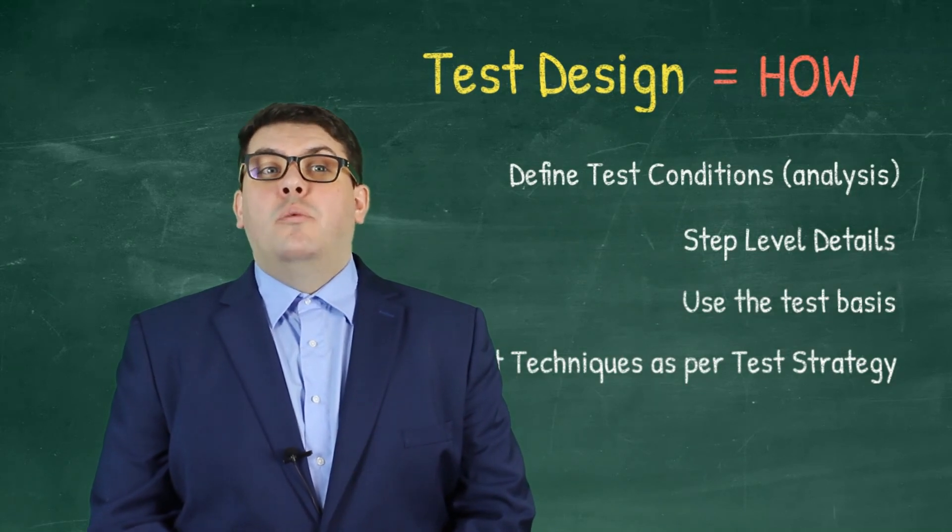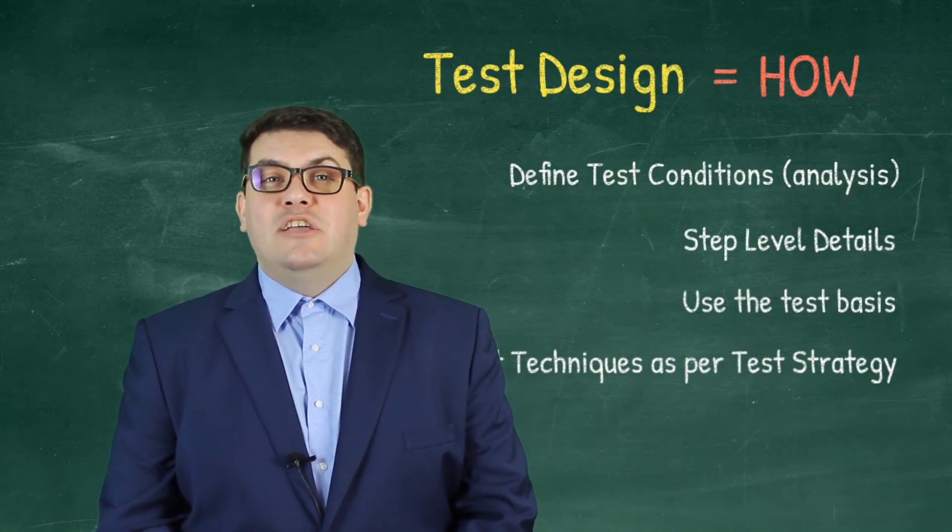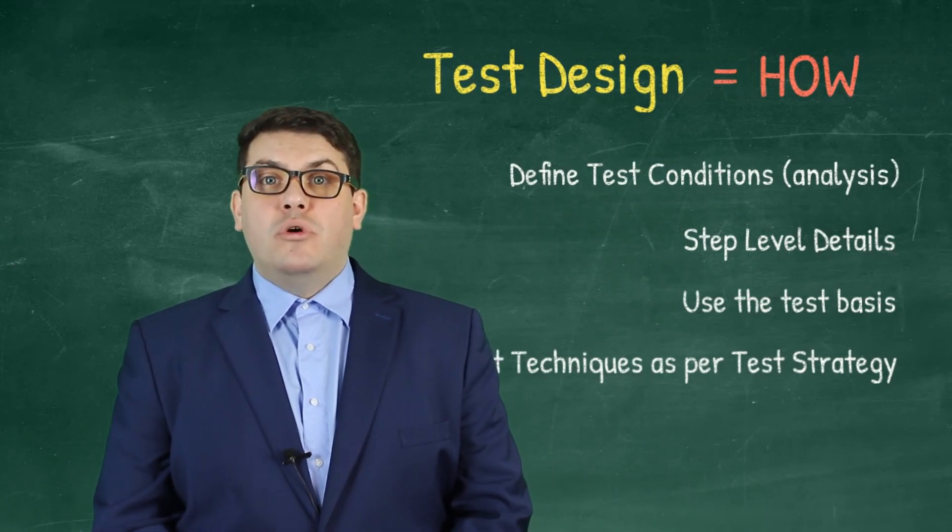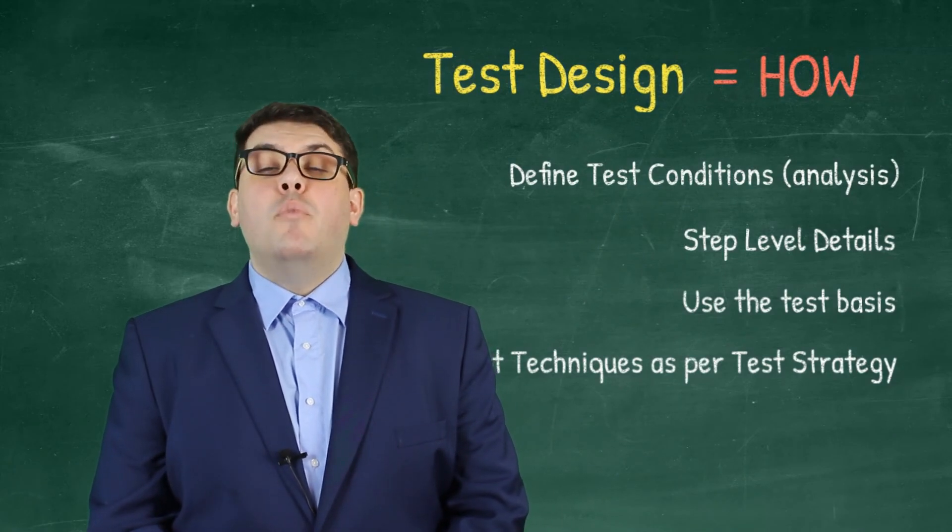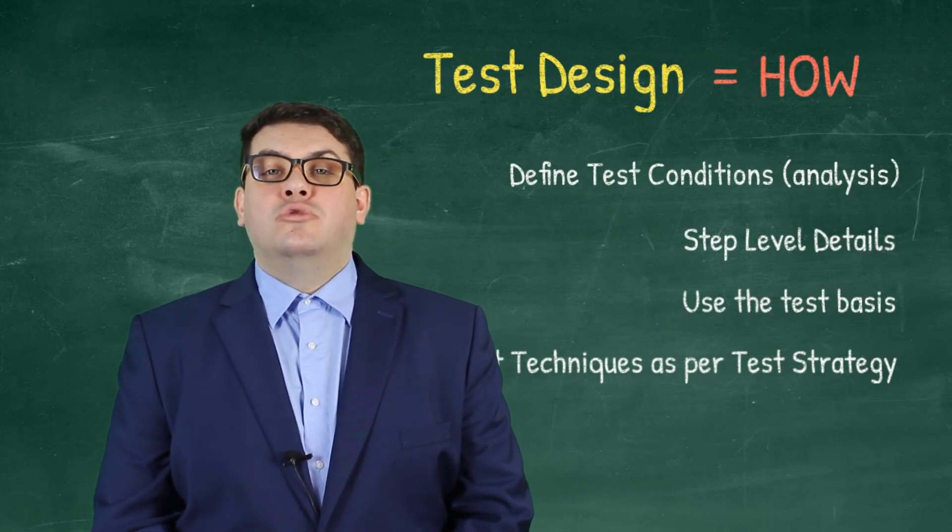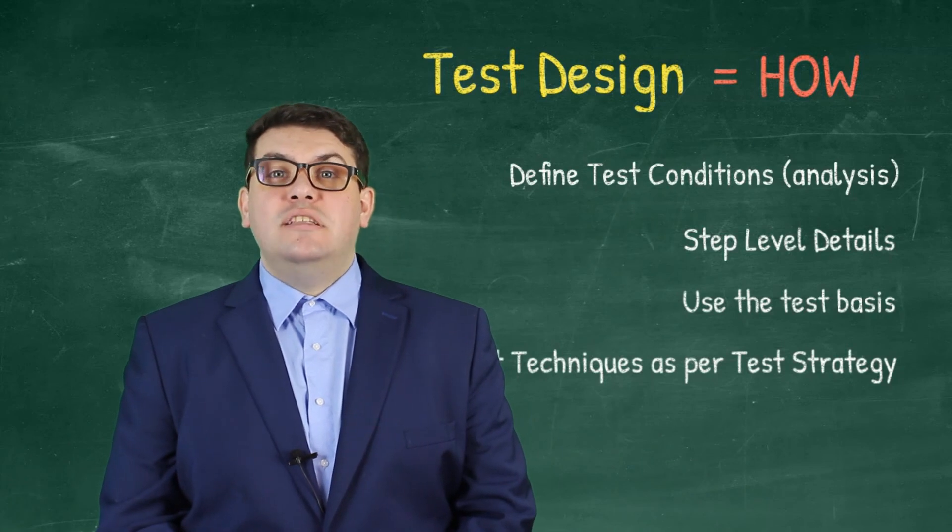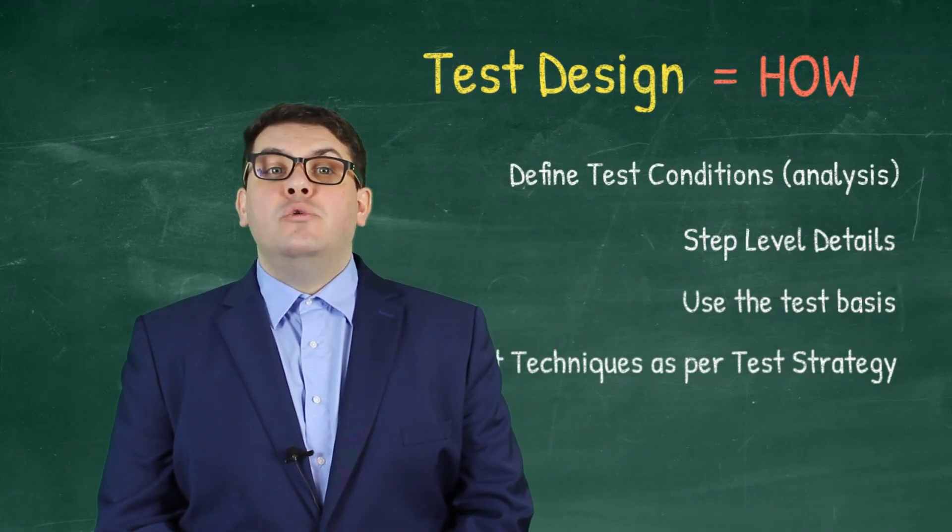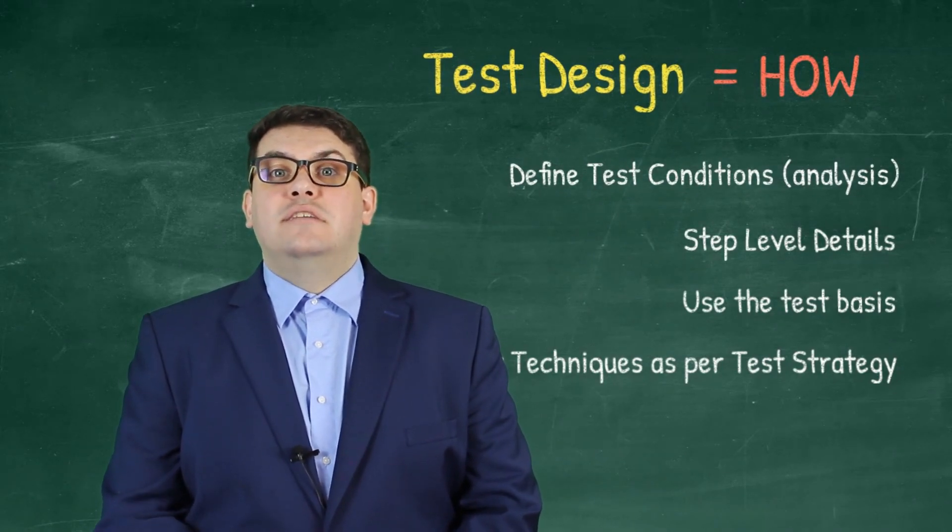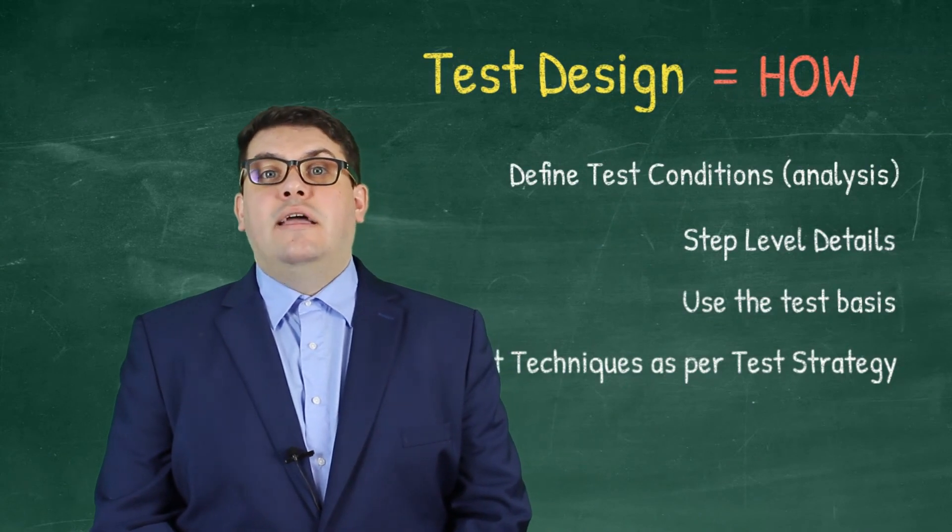Now do not forget, we mentioned test analysis and test design. They are going to be followed by test implementation and test execution. But test planning is very important and also is test closure. The monitoring and control that we define during test planning needs to be exercised also within test analysis and test design. Don't forget, we need to have a proper plan that will consider these two stages and we need to keep our eyes for when the actuals deviate from the plan so that we can exercise proper test control. In the next video, we are going to cover test implementation and test execution.